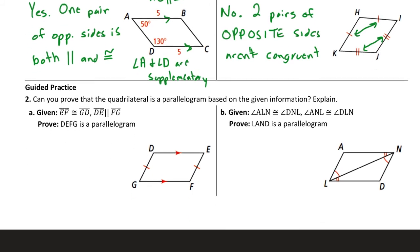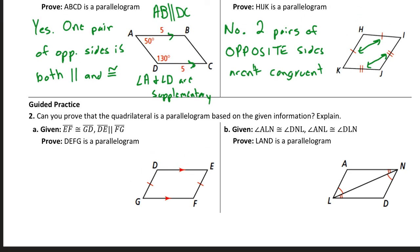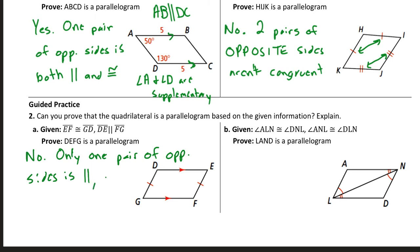For guided practice part A, the answer is also no. Only one pair of opposite sides is parallel and the other pair is congruent — they are different pairs. Both pairs of opposite sides need to be parallel, which isn't the case here. Both pairs of opposite sides need to be congruent, which also isn't the case. Or one pair has to be both parallel and congruent simultaneously. Here, one pair is parallel and a different pair is congruent — so it's not a parallelogram.